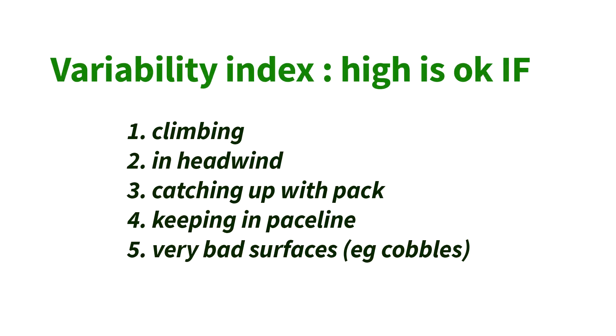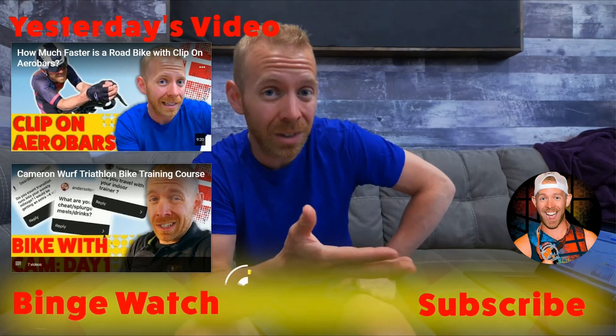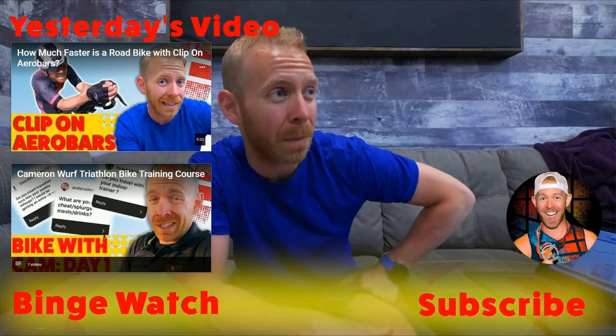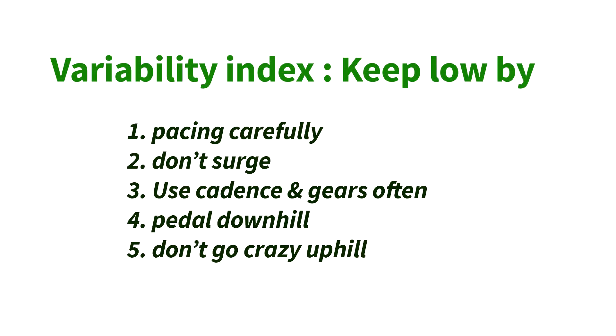Is there a situation where a high Variability Index is good? If you look at Strava or WKO traces of pro riders, many have high VI even in triathlon or time trial events. The reason is that in some situations — where speed is low — it's necessary to overpower to overcome a short obstacle, typically a climb. It could also be riding into a temporary headwind or catching up with the pack. In those situations, going overpowered is outweighed by the speed benefit. When the VI is high you are burning matches, but that's what matches are for — to be burned when the benefit is more than the cost.